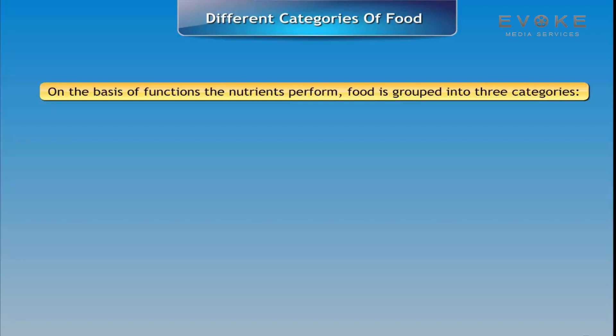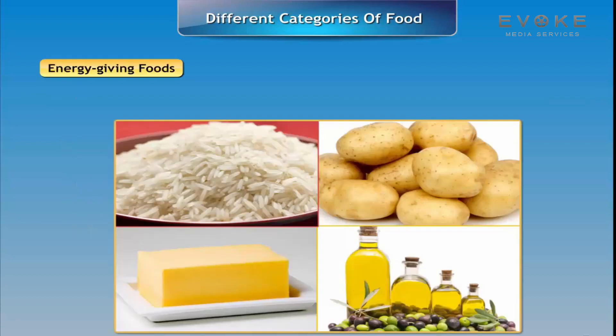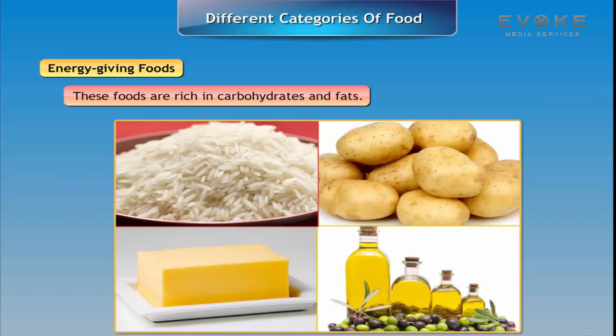Food is grouped into three categories on the basis of the functions the nutrients perform. These are energy-giving foods, body-building foods, and protective foods. Energy-giving foods are rich in carbohydrates and fats.